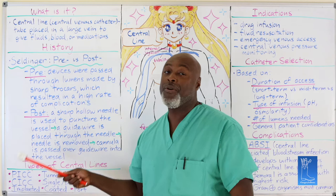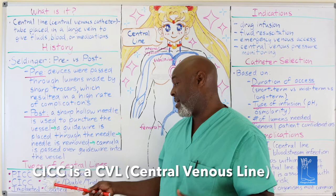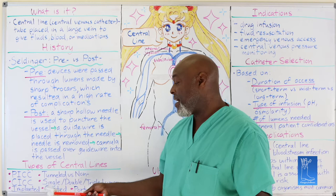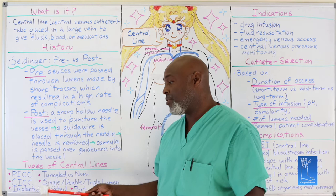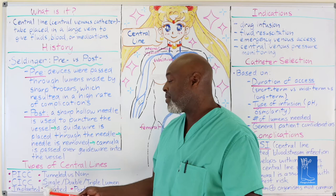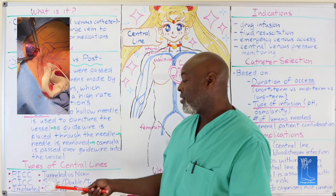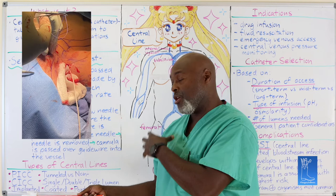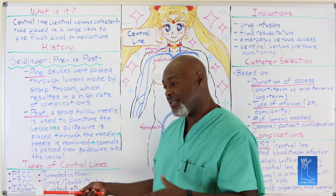A PICC line can stay in for 30 days or longer depending on what you need it for. A CICC line — centrally inserted central catheter — is the triple lumen catheter we put in in the ICU or the emergency room if necessary. An implanted device like a metaport is something primarily used for chemotherapy. A central line is shorter and usually put directly into the jugular or subclavian. A port is placed in one spot, tunneled up to a vein, and sits underneath the skin where you can't see it.